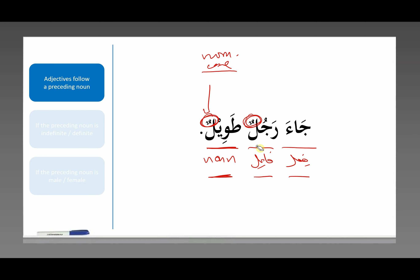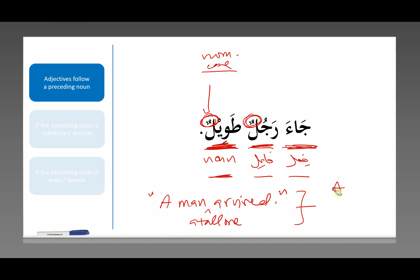What does this mean? This means a man arrived, just like we saw. But this word at the end is adding a little bit more information. A tall one arrived — or, in more clear English, a tall man arrived. What is this word طويل doing? It's adding a description to a man. So now we're not talking about any man; we're talking about a specific kind of man — a tall man. That is what this word طويل is doing in this sentence.